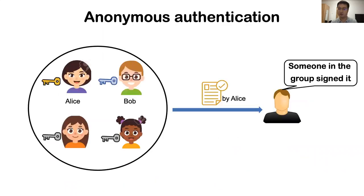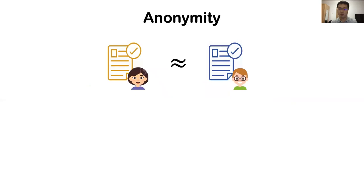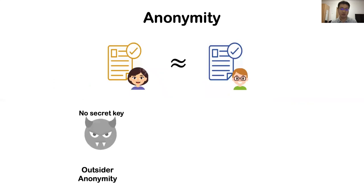Let's take a quick look at anonymous authentication, which is a major class of NISC applications. In general, it allows users to sign a message on behalf of a group, and the verifier will be convinced this message was signed by someone in this group, but cannot figure out who signed it. The anonymity is usually formalized via indistinguishability. In the literature, anonymity indeed has many variants according to the adversary's knowledge. The simplest case considers outsider anonymity.